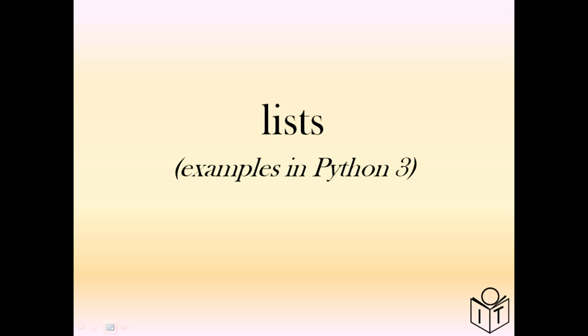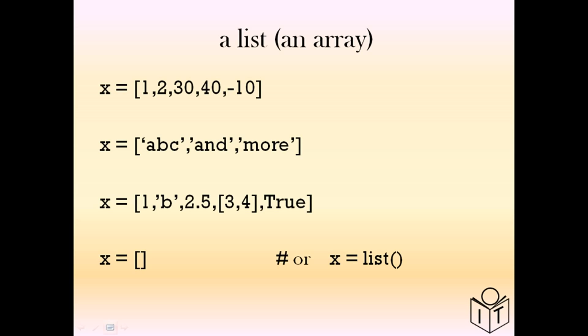A Python list is an array in other programming languages — just a collection of items. We can have a collection of integers, strings, or a mixture: integers, strings, floats, lists inside lists, and even booleans.